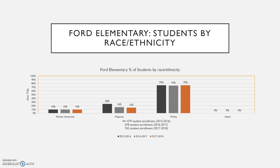Here's the breakdown of students by race and ethnicity. In 2015-2016 the enrollment was 679. There were about 10 percent African American students across three years, Hispanic students at 25 percent in 2015, 16 percent in 2016, and 15 percent in 2017, with the school being predominantly white at 75 to 74 percent of students by race and ethnicity.